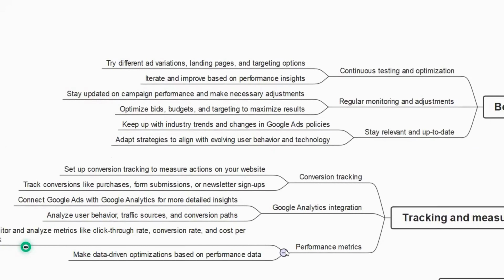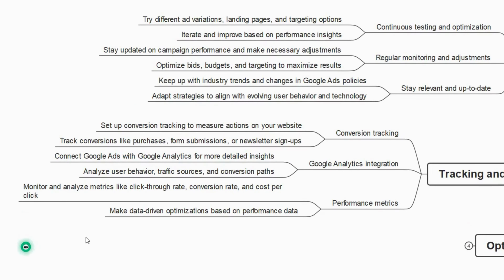Performance metrics include monitoring click-through rate, conversion rate, and cost per click. For example, with a budget of 1,000 rupees, if the cost for one click is 0.68 rupees, then the cost per click is 0.68. Make data-driven optimization decisions based on the performance data — you can optimize ads using certain keywords or different types of targeting.